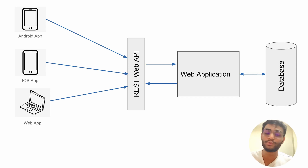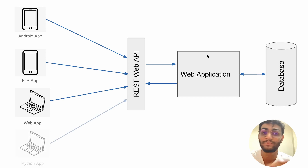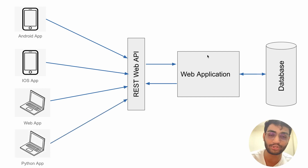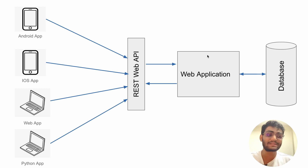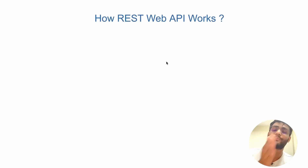In the future, if you want to add some other kind of client application, you could add it seamlessly. For example, if you want to add a Python application, you can do so. Now let's understand how the REST API works in terms of its components.